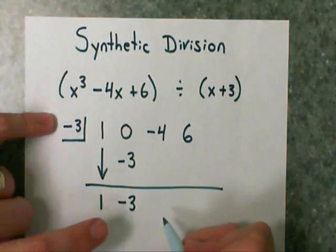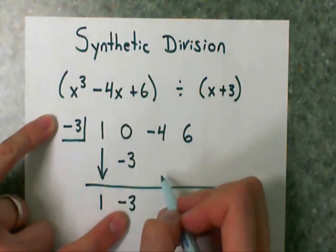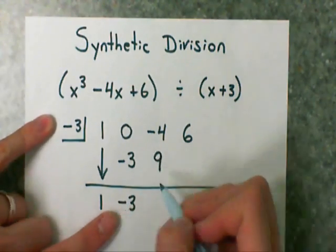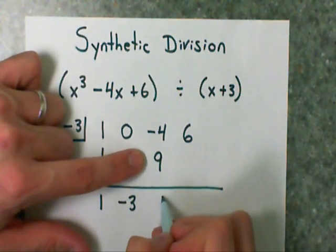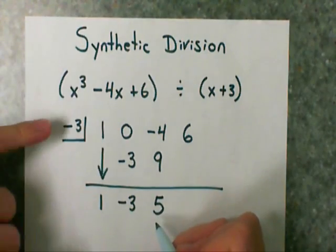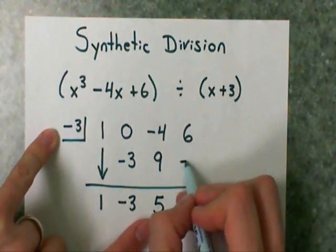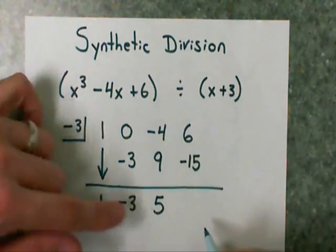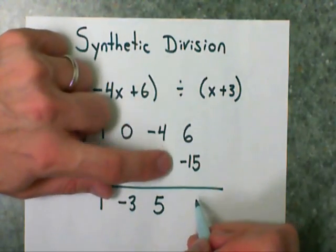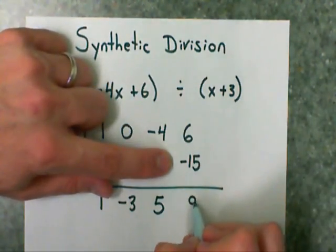I'm always multiplying what's in the box times what's under the line, so negative 3 and negative 3 makes 9. I'm going to add down. Negative 3 times 5 is negative 15. I'm going to add down. Signs are different, so I'm actually subtracting, keeping the larger sign.